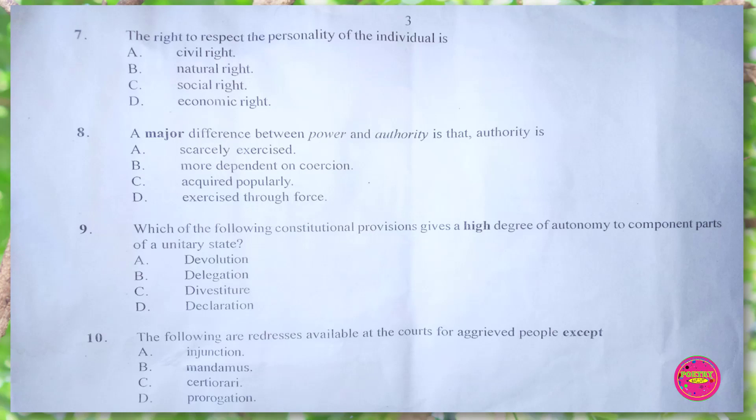Question 9. Which of the following constitutional provisions gives a high degree of autonomy to component parts of a unitary state? A. devolution, B. delegation, C. divestiture, D. declaration. The correct answer is A. devolution.